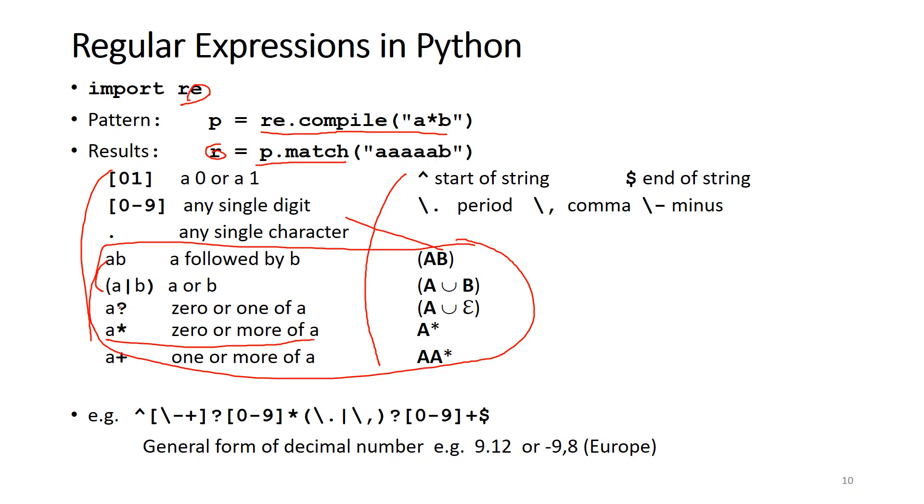We have two more: question mark and plus. That has zero or one for the question mark, one or more for the plus sign. And we can define them like this. This is just an example for the general form of decimal numbers. We can match those things.